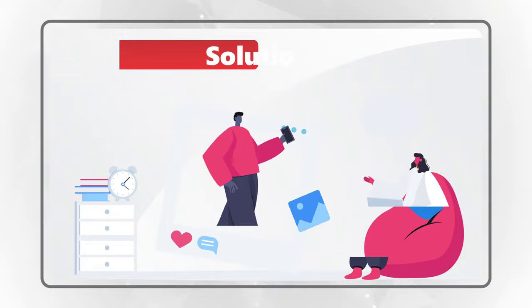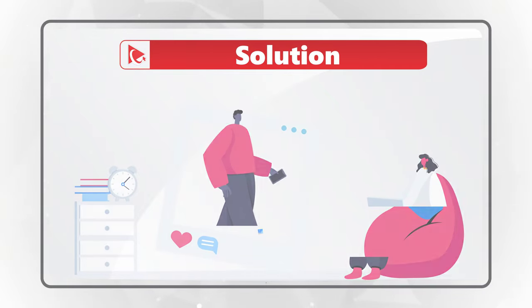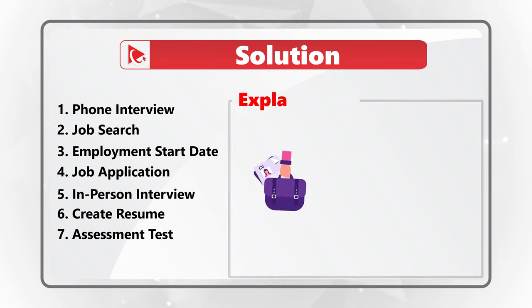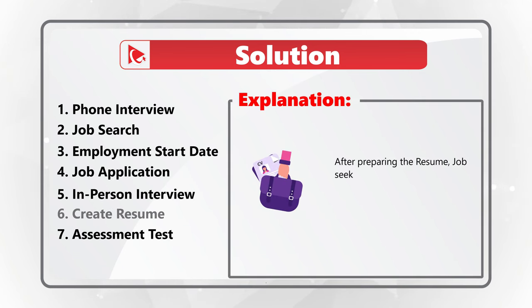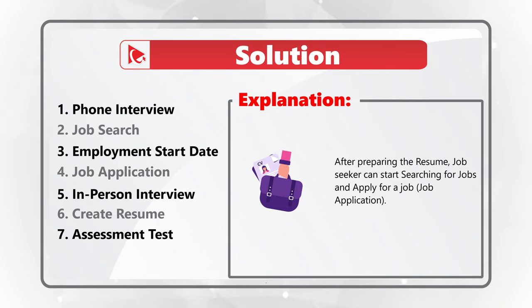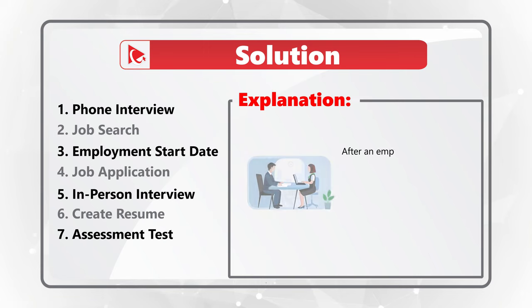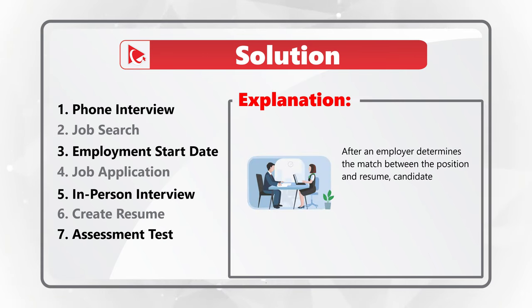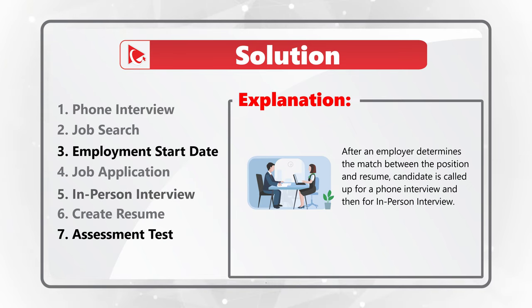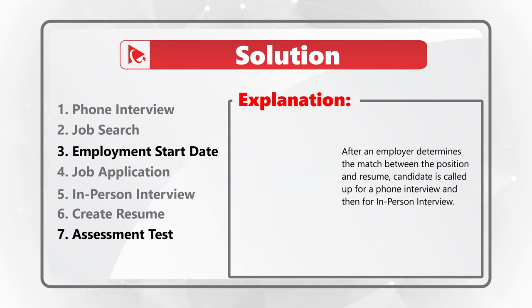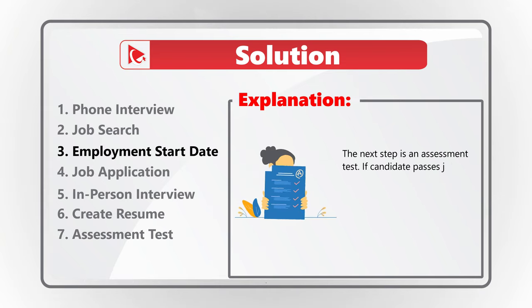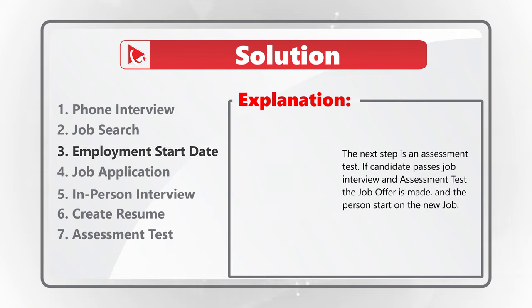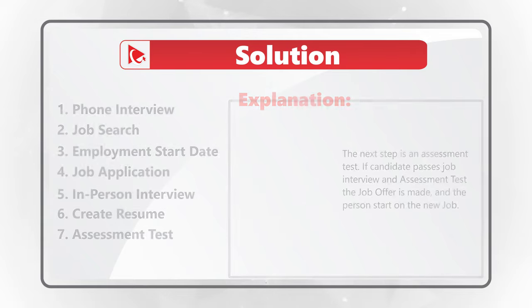If you have a better way to solve it, please make sure to post in comments. In the typical job search process, after preparing the resume, a job seeker can start searching for a job and apply for a position — this is called the job application process. After an employer determines the match between the position and the candidate's resume, the candidate is called for a phone interview and then an in-person interview. The next step is an assessment test. If the candidate passes, a job offer is made and then the person starts on the job. So the correct choice is choice B.